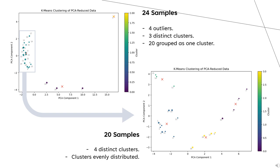As you can see, there is a broader spread of the remaining 20 samples, and there are four distinct clusters that are relatively more evenly distributed.